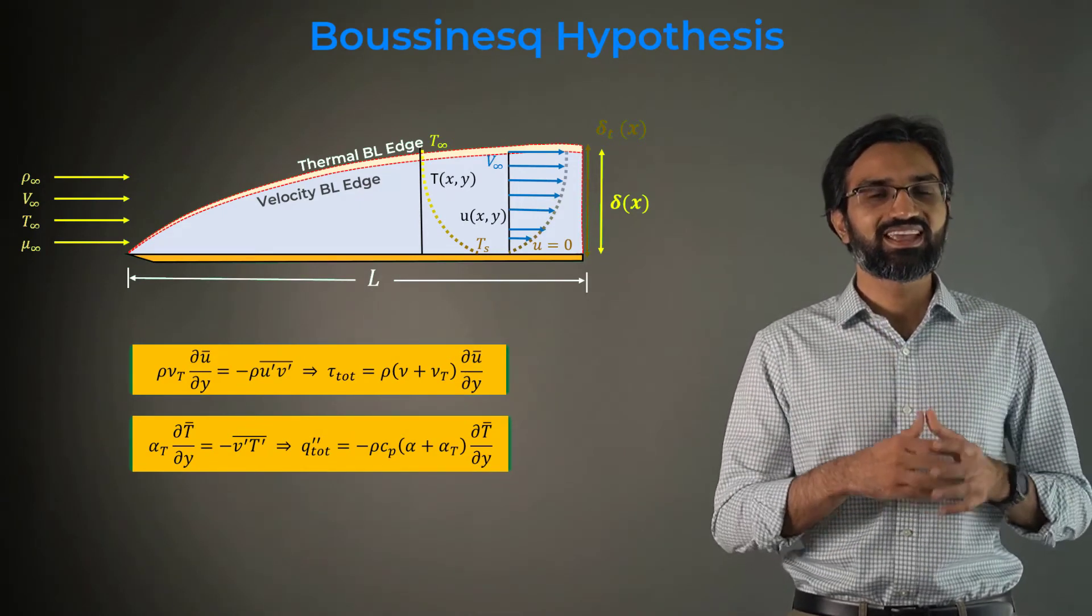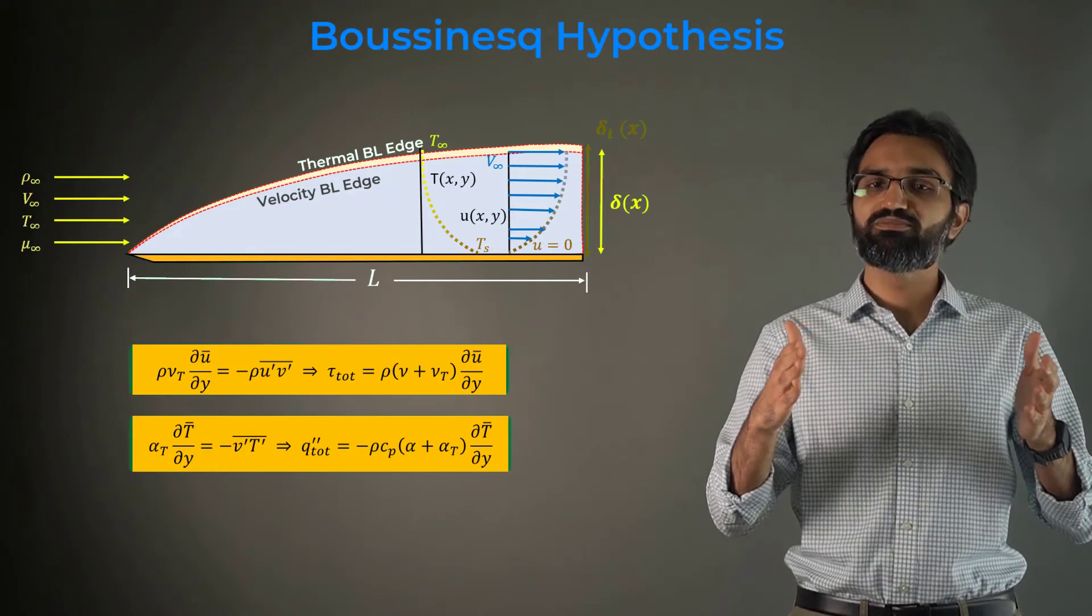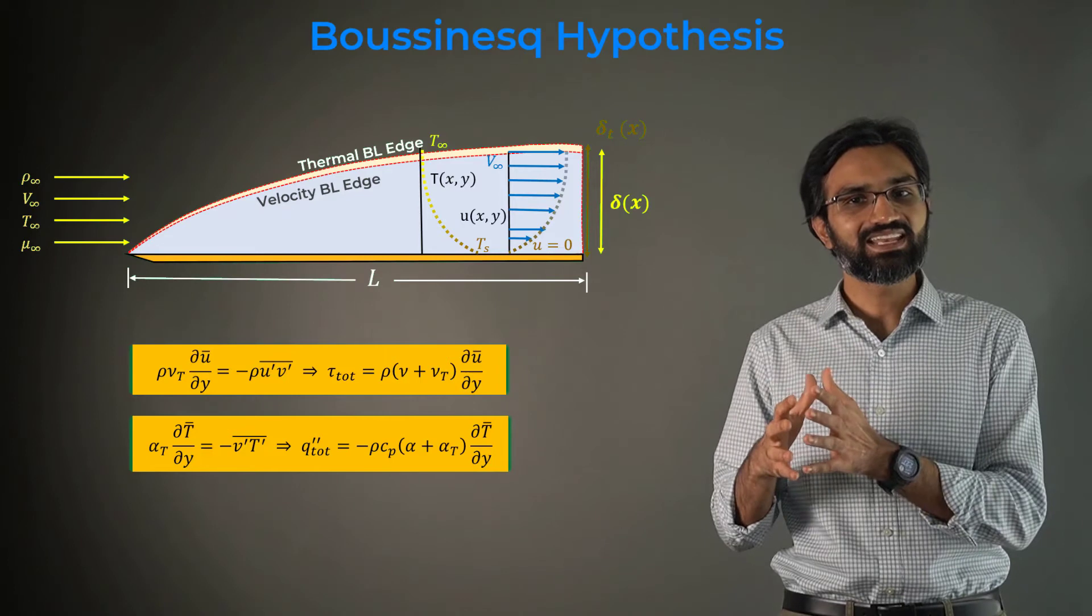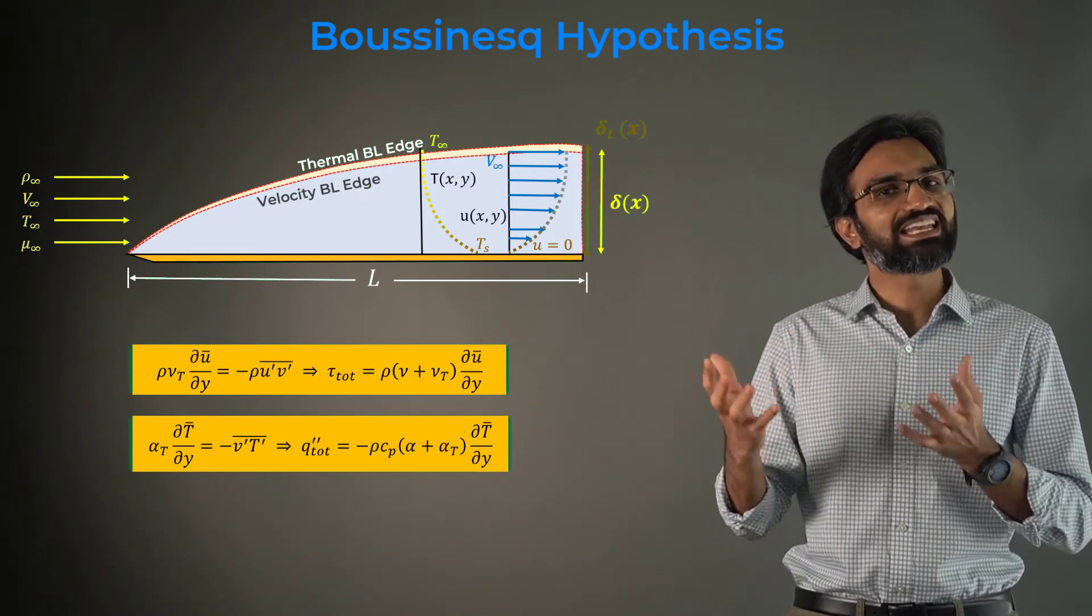In this approach, the Reynolds stress is related to the gradients of mean flow velocity using eddy viscosity and gradients of temperature through eddy diffusivity.